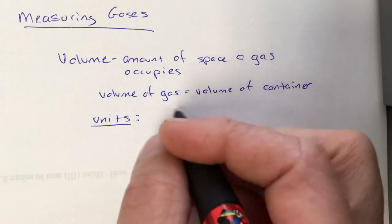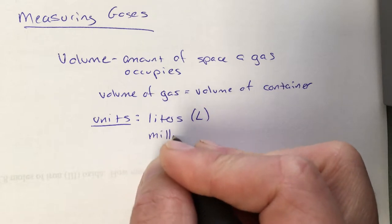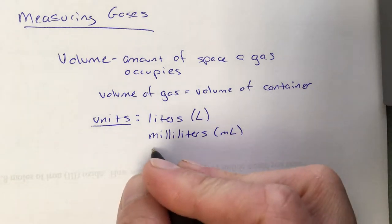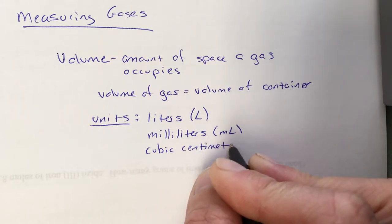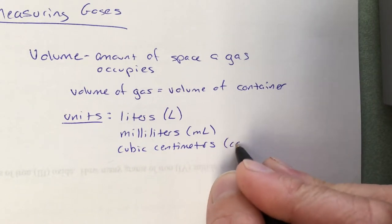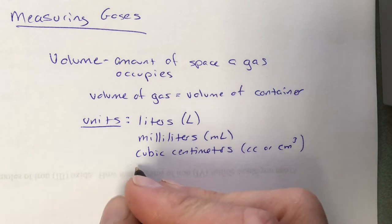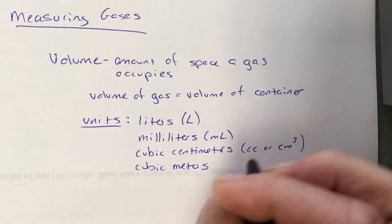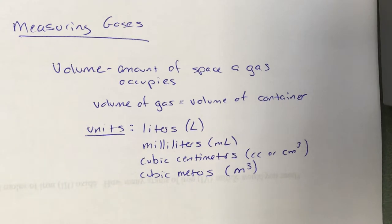The most common units will be liters, abbreviated L, milliliters, abbreviated mL, cubic centimeters, abbreviated cc or cm cubed, and cubic meters, abbreviated meters cubed. Those aren't the only units that we could use to measure the volume of gas, but these are the ones that are most commonly used.